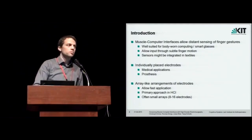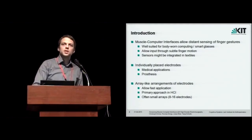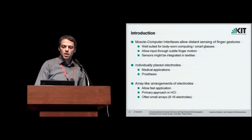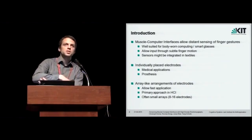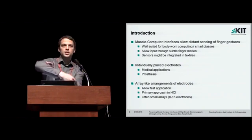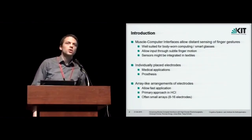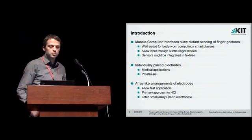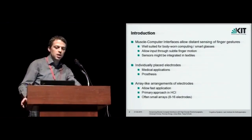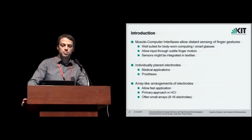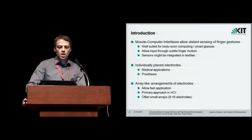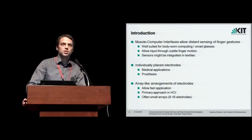One of the big advantages of muscle computer interfaces is that they allow distance sensing of finger motion or finger gestures by applying the sensors at the forearm, since the main finger extensors and flexors are located at the forearm. That makes them very well suited for body-worn computing or combination with smart glasses, and they allow input through subtle finger motions without placing actual sensors at the fingers.